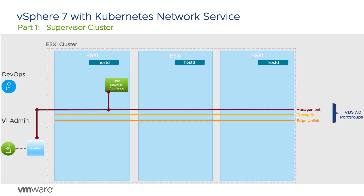The first network service provider is NSX. The environment has an initial setup with an ESXi cluster containing three hosts managed by vCenter. I've created a version 7 vSphere distributed switch, or VDS. The vCenter management network has the NSX universal appliance connected to it. The transport network will carry the encapsulated NSX traffic, while the edge network is the uplink to networks outside of NSX.